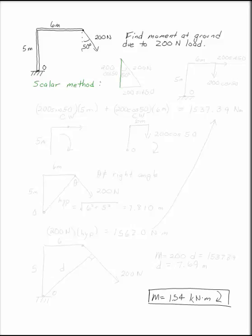So we're going to draw our triangle. This is the 200-Newton load. Here's my 50 degrees. This is going to be 200 cosine 50, and this is 200 sine 50.